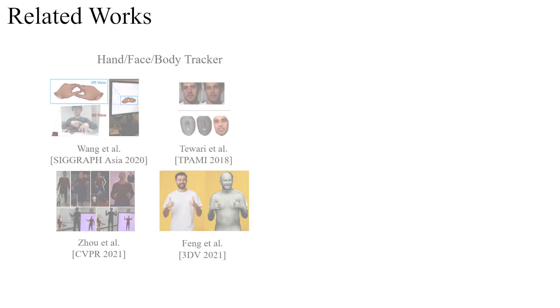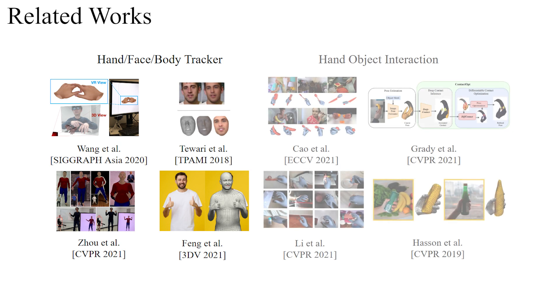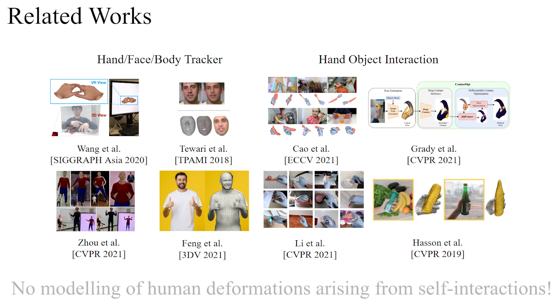Several existing approaches estimate 3D facial geometry, hand articulations and shapes, or whole 3D body shapes without interactions, and other methods reconstruct 3D hand interactions with objects. However, none of the works reconstructs deformation due to interactions between human body parts, for instance when hands interact with a face.